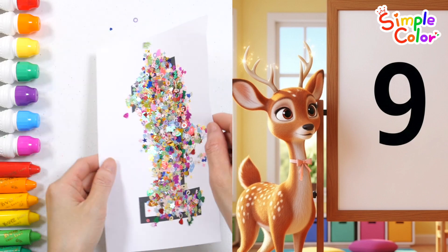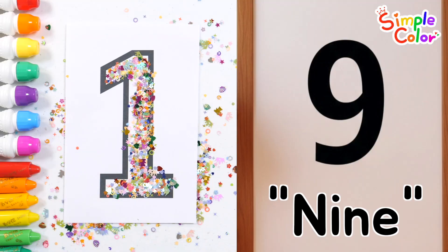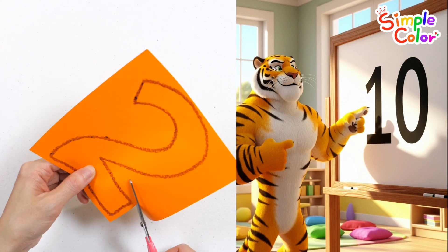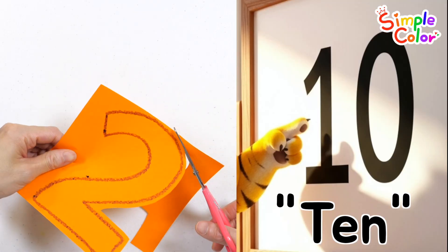The deer with shiny antlers calmly reads the number. This is nine. Finally, the confident tiger steps forward. Ta-da! This is number ten! Just as awesome as me!